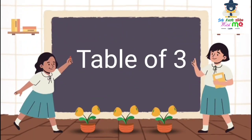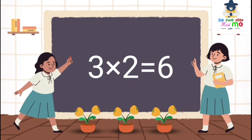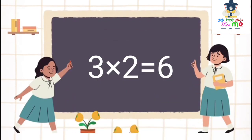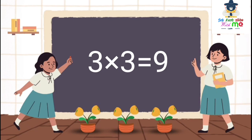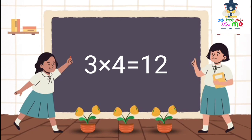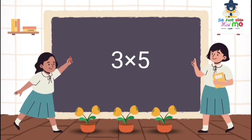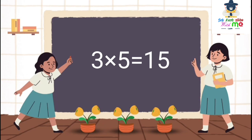Today we will learn the table of 3. 3×1=3, 3×2=6, 3×3=9, 3×4=12, 3×5=15.